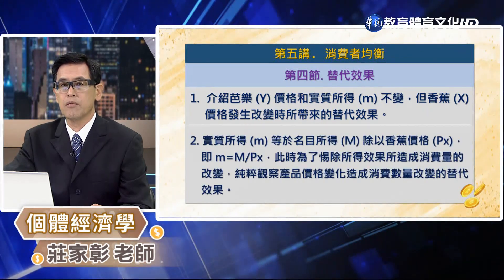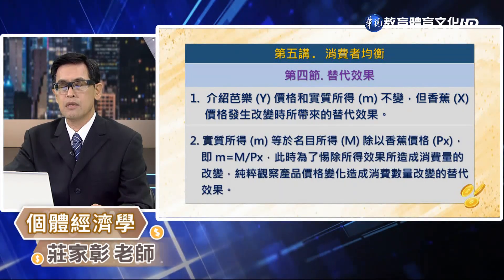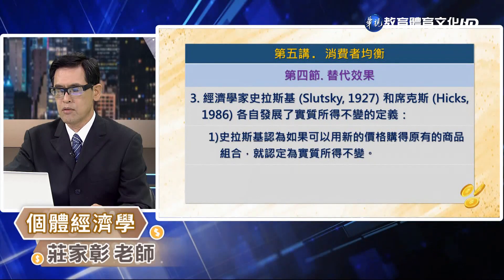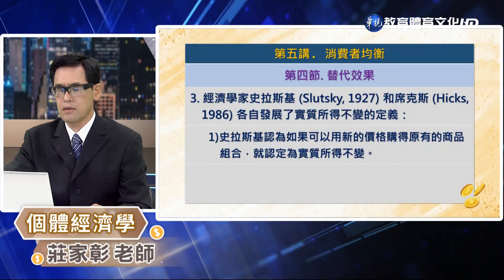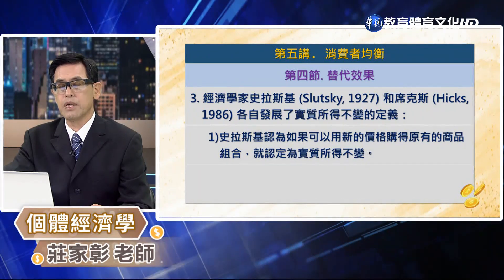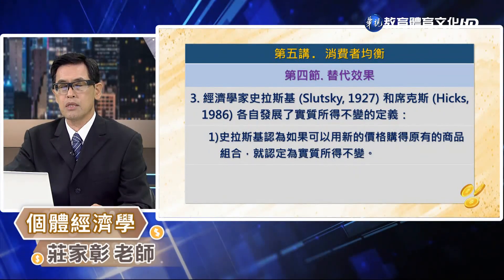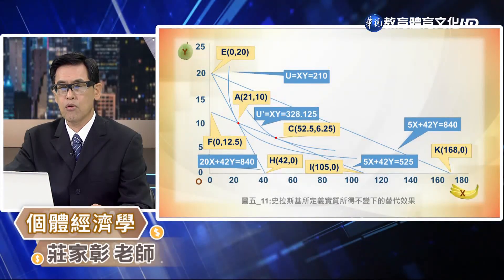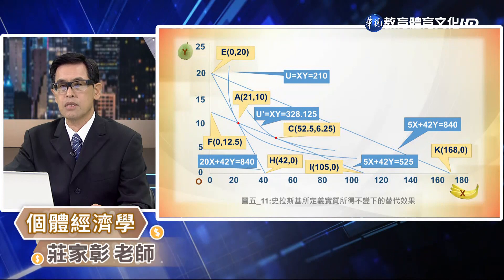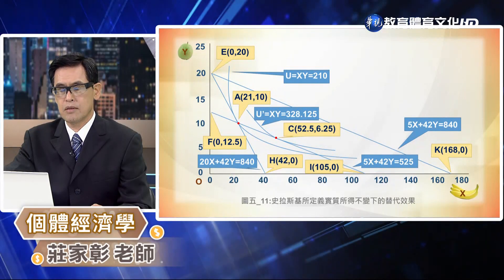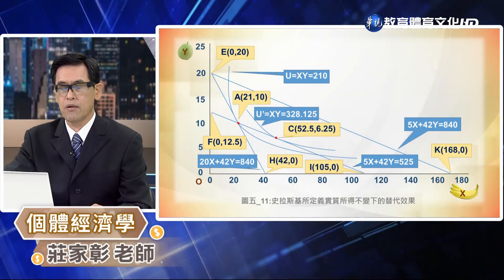我們這一節要介紹的是巴勒的價格跟實質所得不變，但是香蕉的價格發生改變所帶來的替代效果。這裡強調的是實質所得不變。實質所得不變有兩個學者各自定義出不同的定義，其中之一是史拉斯基，在他的定義之下所謂的實質所得不變，是指用新的價格可以購買旧的消費數量，透過旧的消費組合點畫一條新的價格線，在這個新的價格線上面找一條新的效用水準無異曲線，然後觀察這個消費組合點跟旧的消費組合點它們的差異。